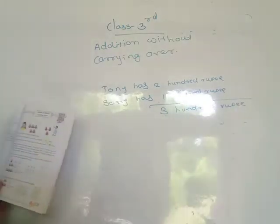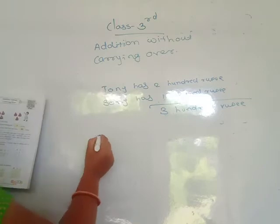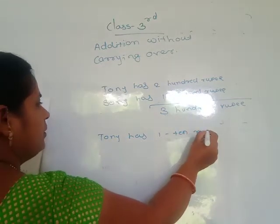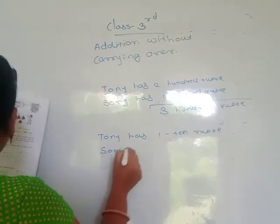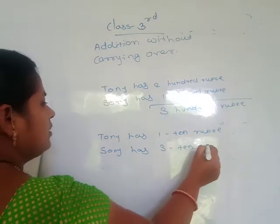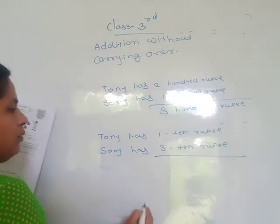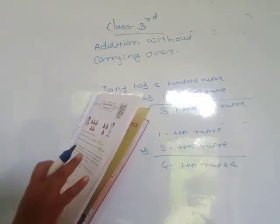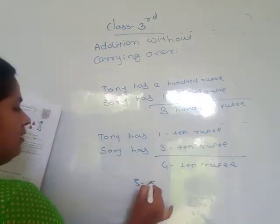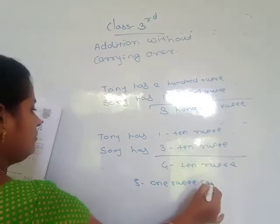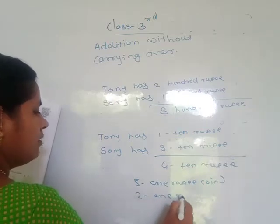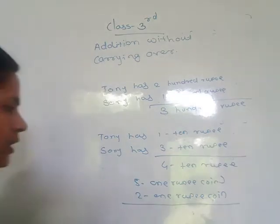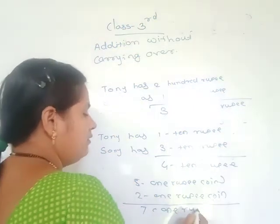Tonu has 1 ten-rupee note and Sonu has 3 ten-rupee notes, so together they have 4 ten-rupee notes. Tonu has 5 one-rupee coins and Sonu has 2 one-rupee coins, giving a total of 7 one-rupee coins.